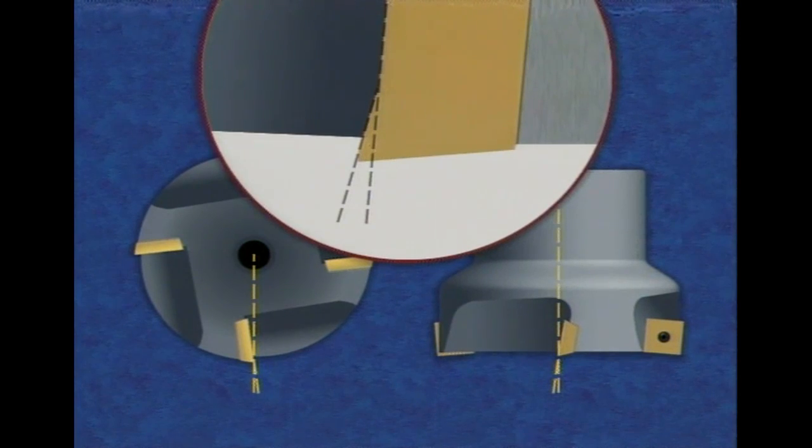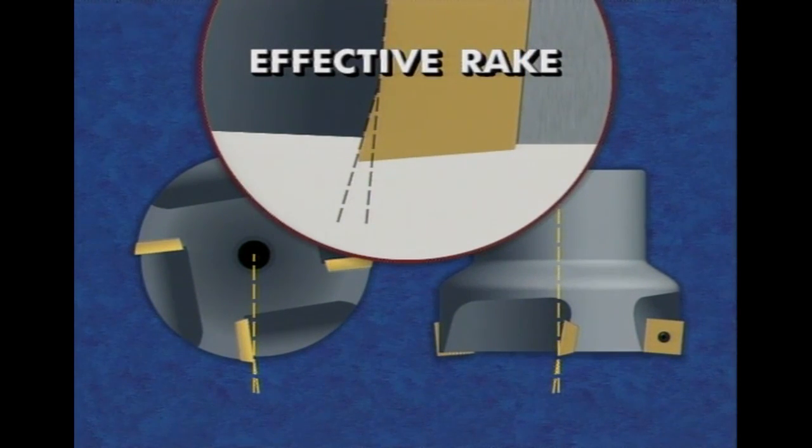The rake angle on the face milling cutter inserts, in conjunction with the cutter body's radial and axial rake angles, contributes to the cutter's effective rake.